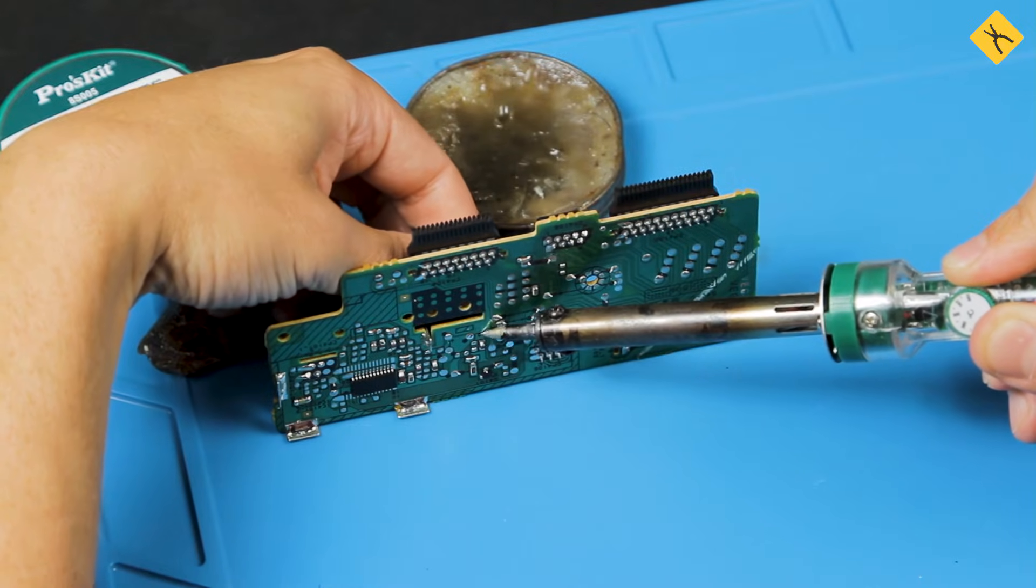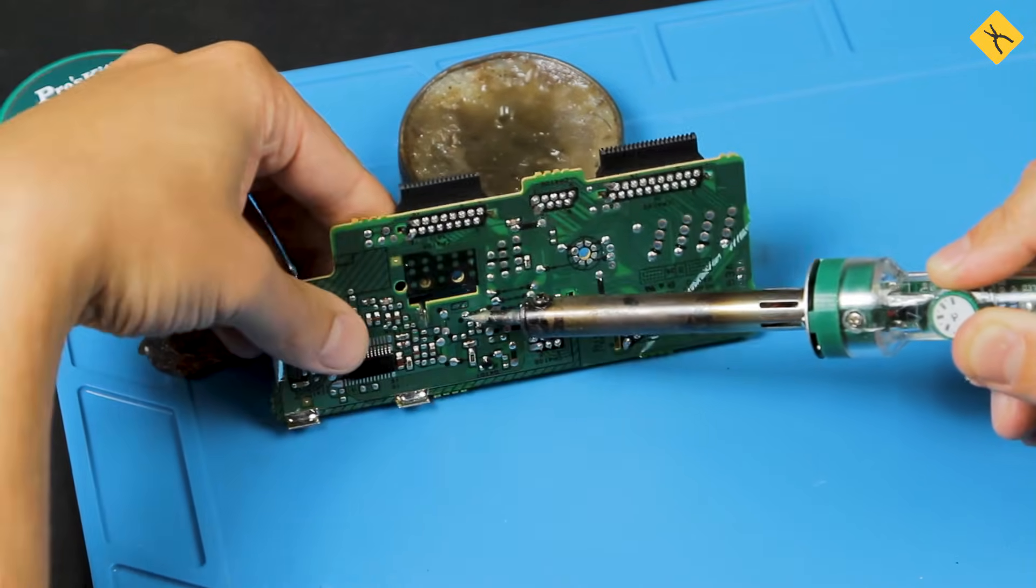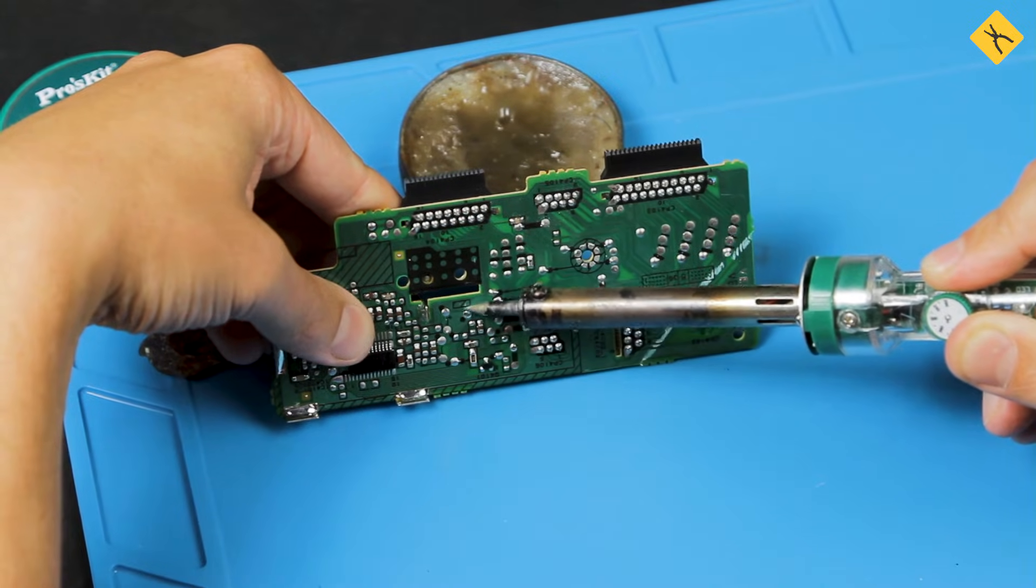Soldering iron is a handheld tool which is used for heating up flux and PCB components during soldering. It's also used for melting and applying solder to contacts of PCB components.